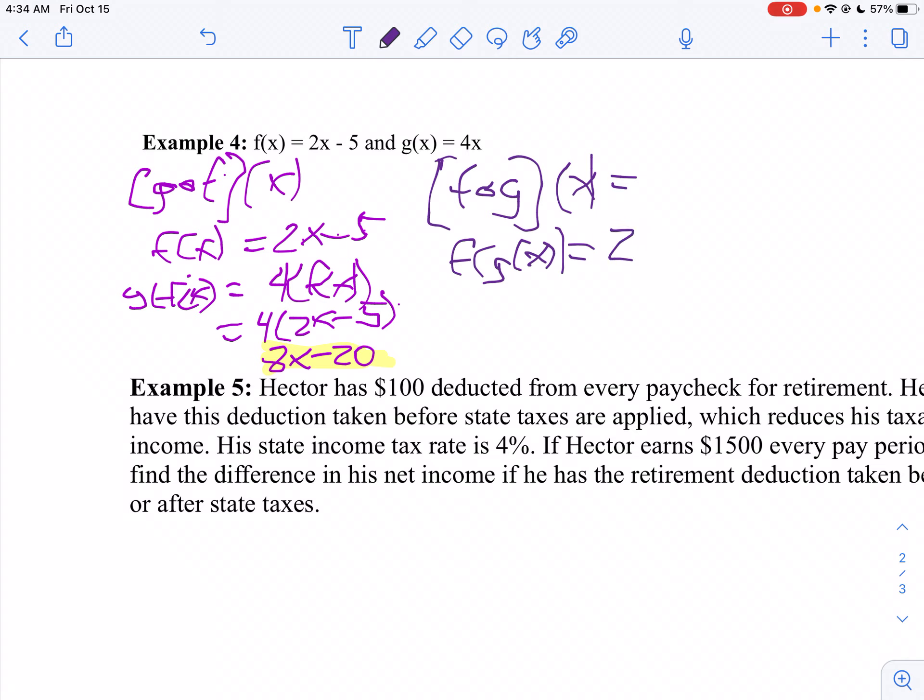So I'm going to say 2 times g of x minus 5. Now we'll replace g of x with what g of x is, which is 4x, then minus 5. So I get 8x minus 5. And that's f of g of x.